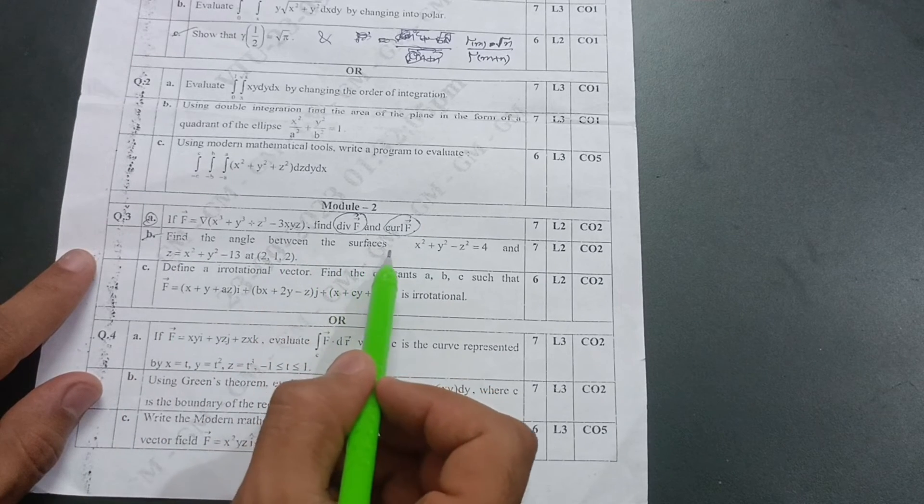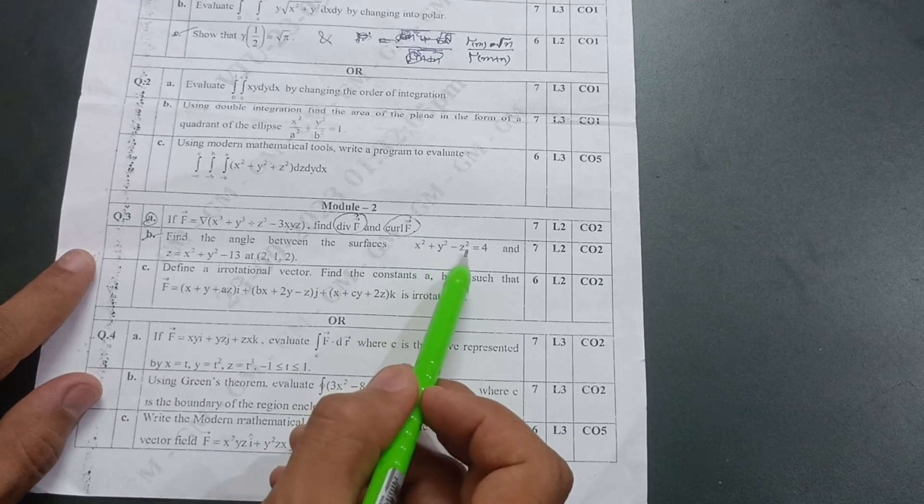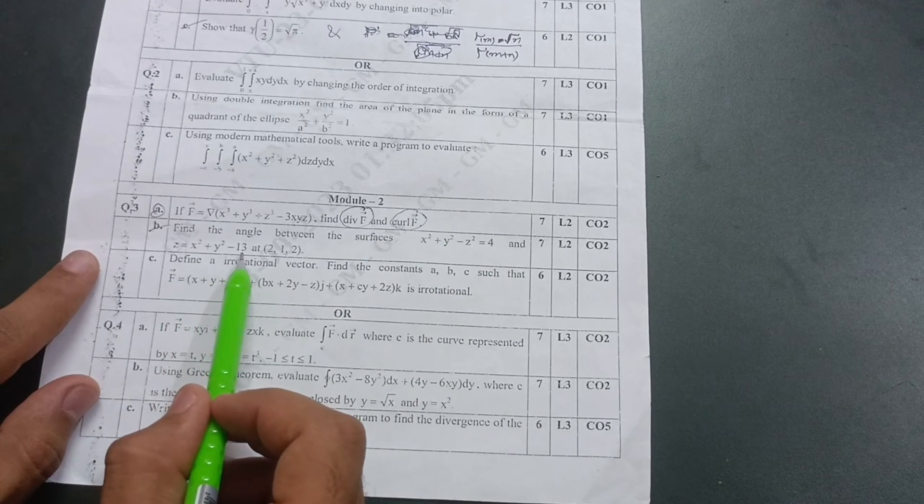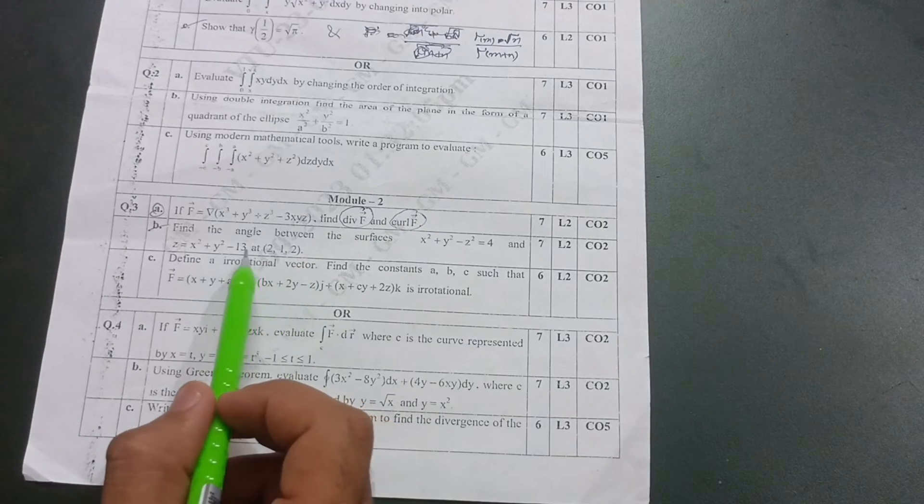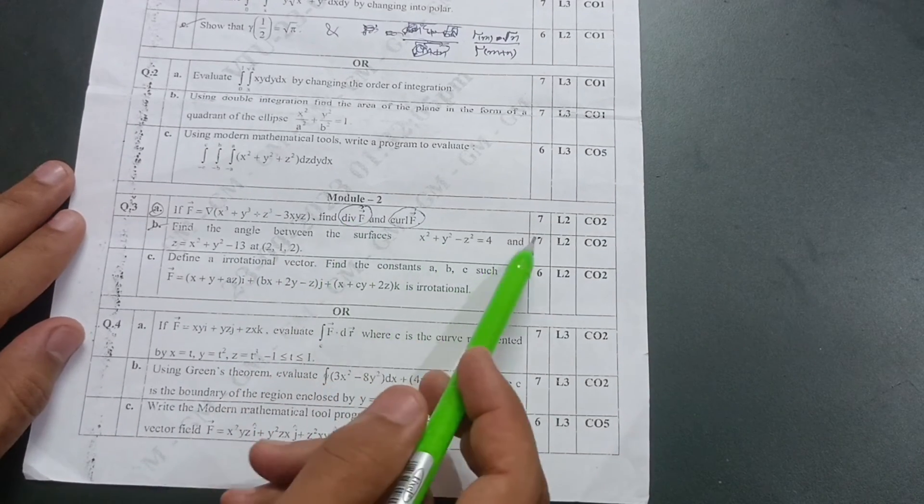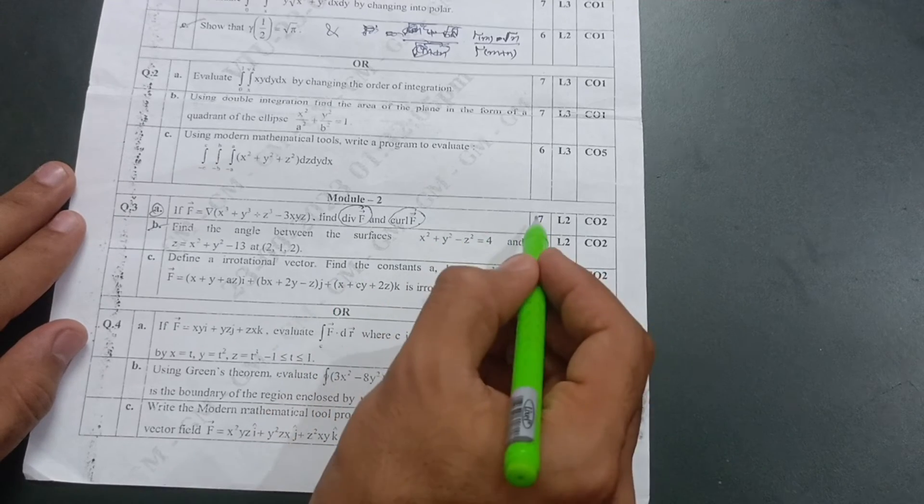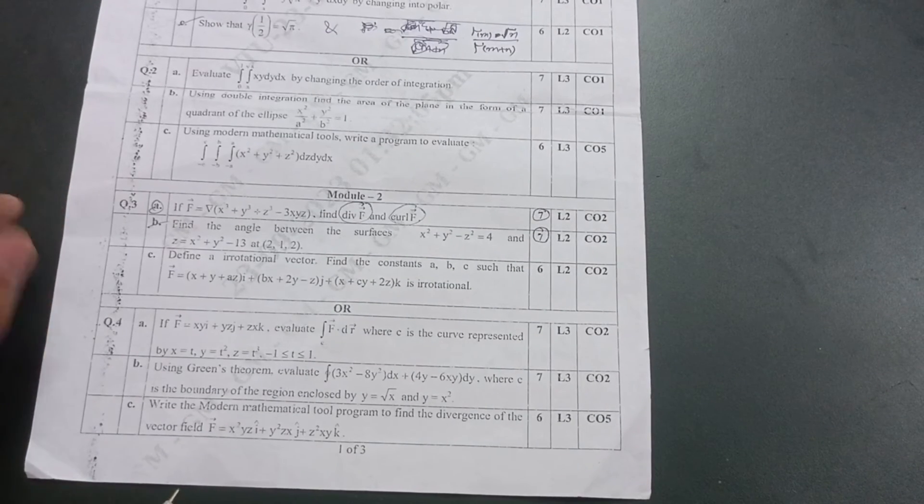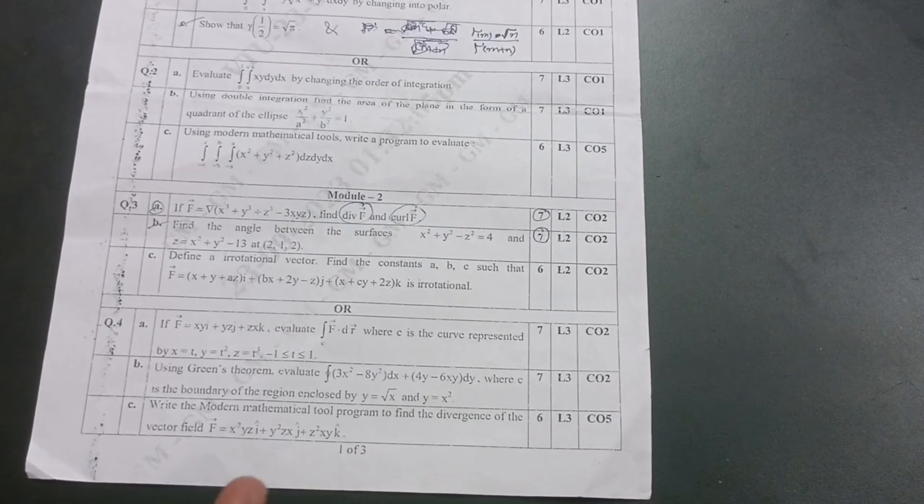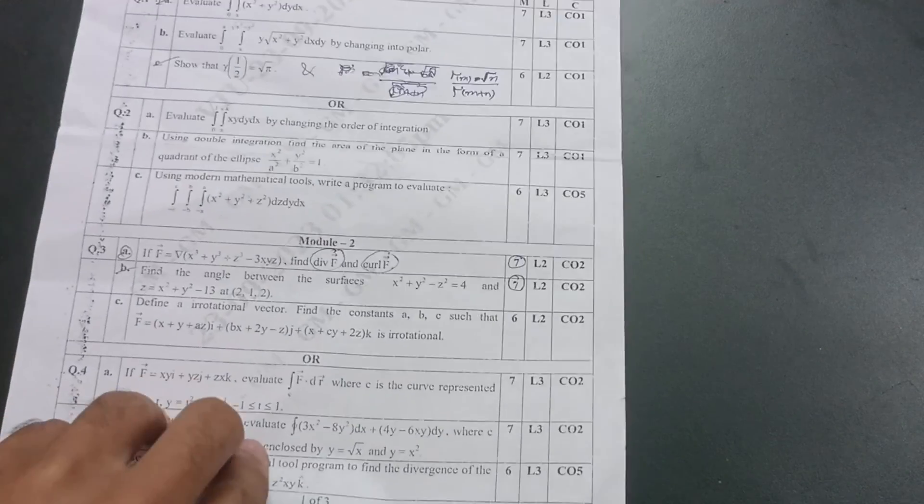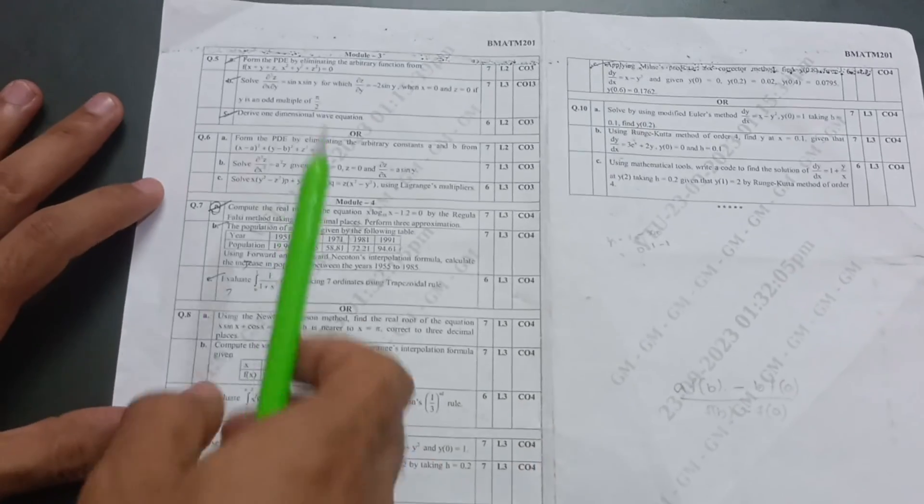Next one: find the angle between the surfaces. Suppose equations will be given: x² + y² - z² = 4 and z = x² + y² - 13 at point (2,1,2). These are the two concepts from module 2. It will carry 14 marks, so these are very important if you are planning for this particular night to pass mathematics. From module 2 take two questions, this will carry 14, and 6 from module 1, that is 20 marks from these two modules.